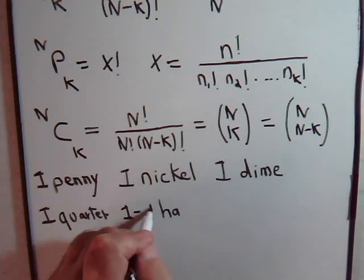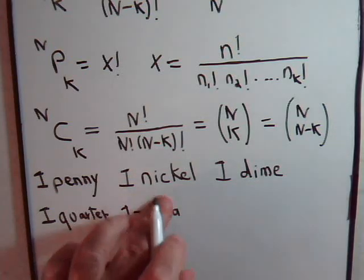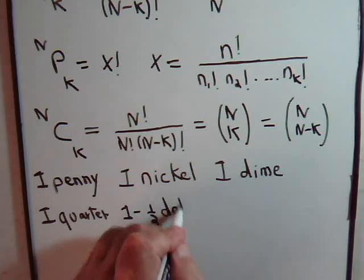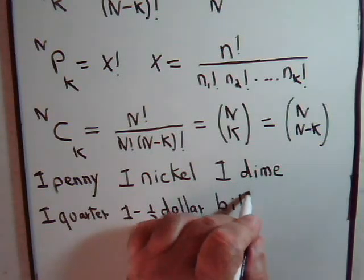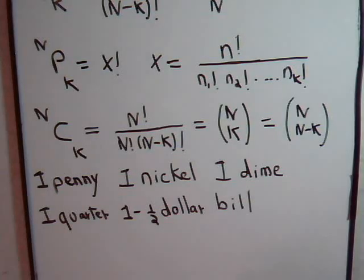And say one half dollar bill. One half dollar bill. So there's one of each, so all of these are unique. And let's say that we want to ask this question.